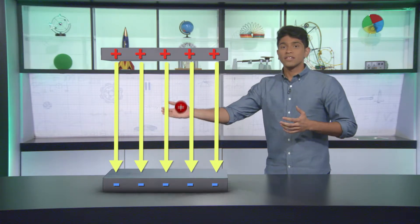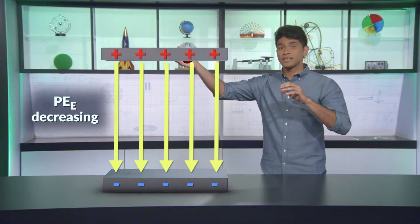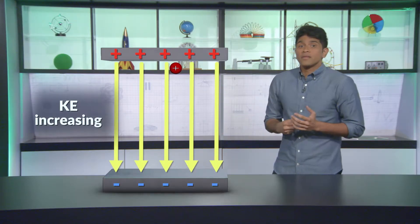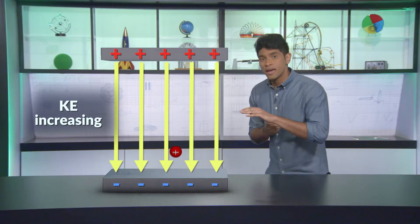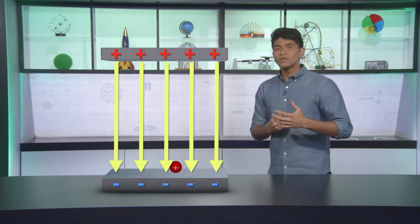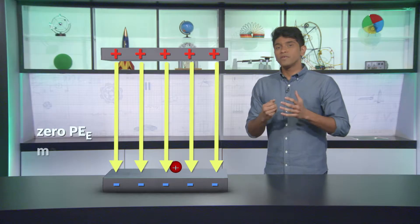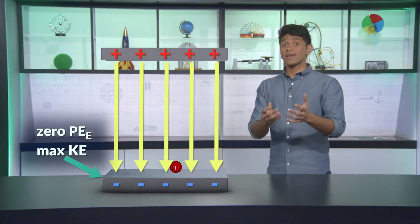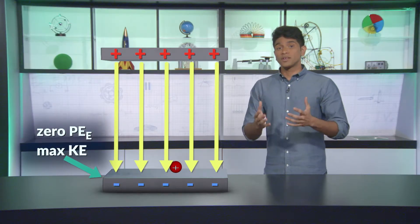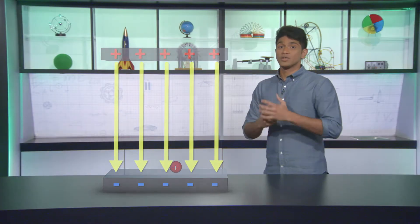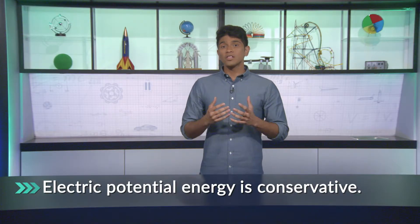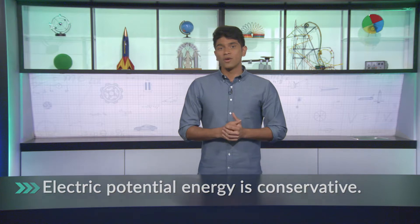The charge doesn't want to be up there, so if you let it start to move, it will be repelled away from the positive plate and attracted towards the negative plate, accelerating all the way down. While it's falling, the electric potential energy is decreasing, being converted into kinetic energy. When it reaches the negative plate at maximum velocity, it has no electric potential energy left — it all changed to kinetic energy. Electric potential energy is conservative, which means it obeys the law of conservation of energy: whatever an object loses in potential energy, it gains in kinetic energy, and vice versa.